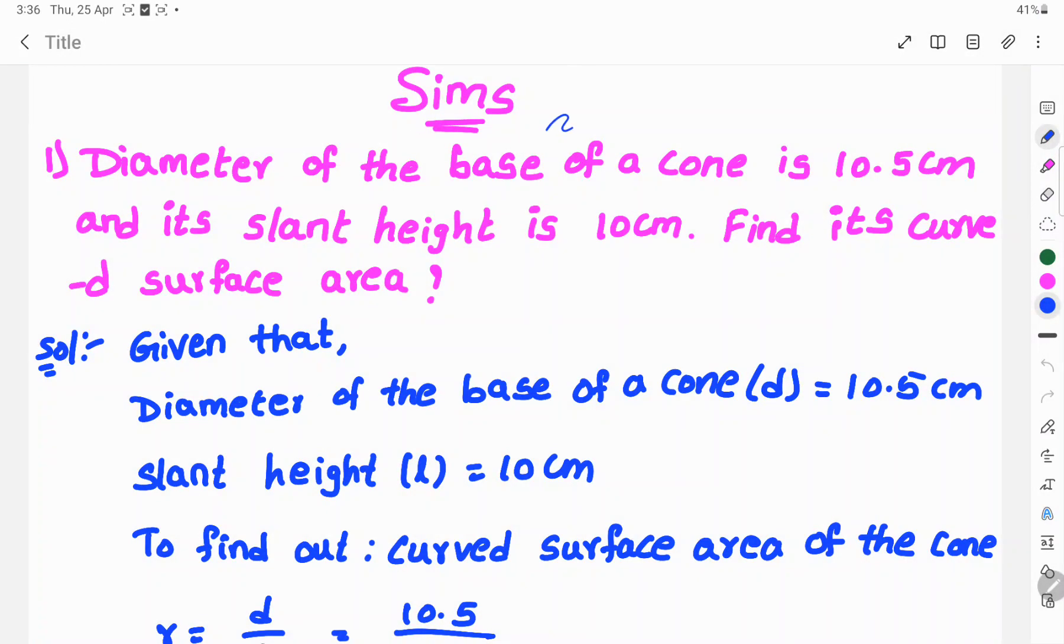Hi, welcome to the series. Diameter of the base of a cone is 10.5 cm and its slant height is 10 cm. Find its curved surface area.